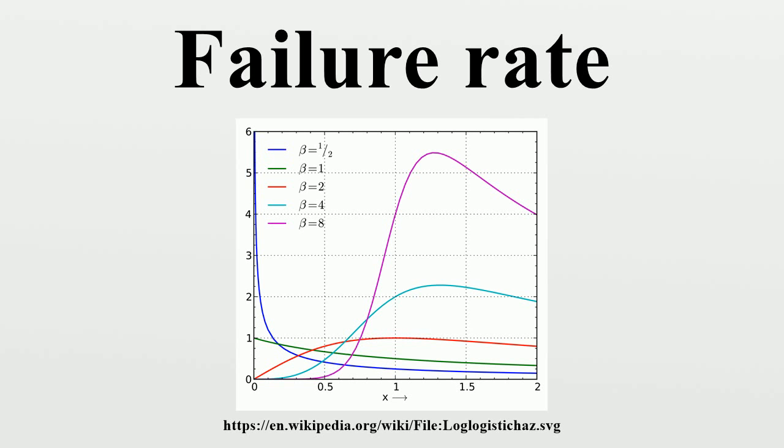In the discrete sense, the failure rate can be defined as the total number of failures within an item population divided by the total time expended by that population during a particular measurement interval under stated conditions.